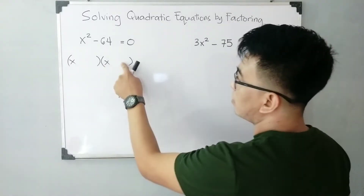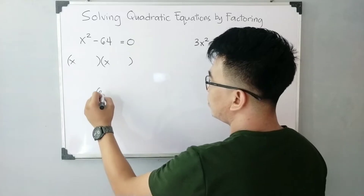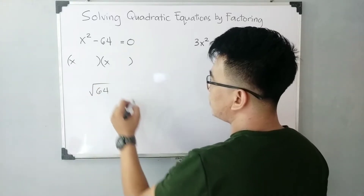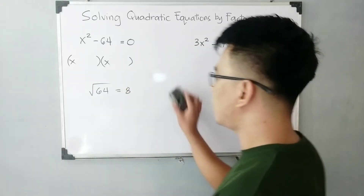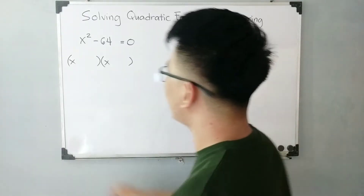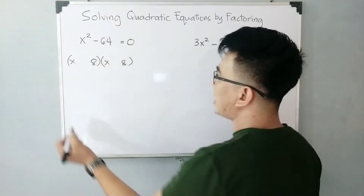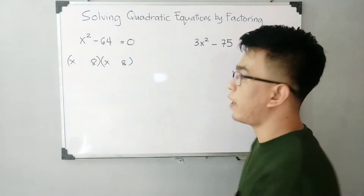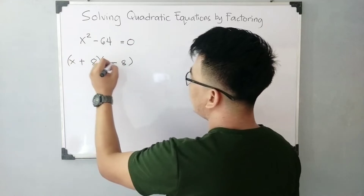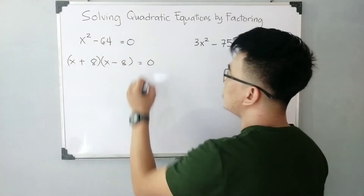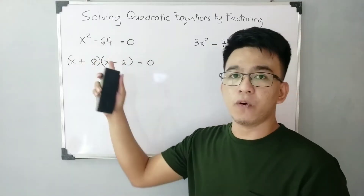To find the second term for these factors, we need to find the square root of 64. The square root of 64 is 8, so we will put 8 and 8. By the pattern of difference of two squares, we write one parenthesis as positive and the other as negative, giving us (x + 8)(x - 8) equal to zero. We have factored x squared minus 64 using the sum and difference of two squares.